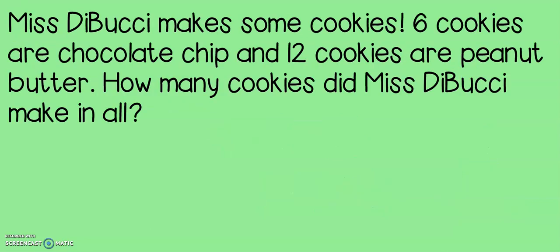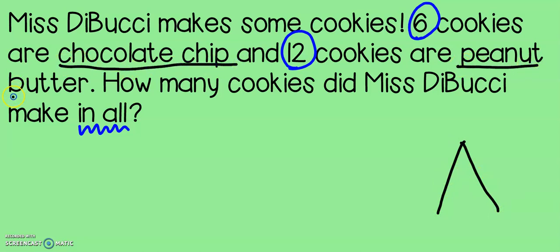Here's another example. Mr. Busey makes some cookies. Oh, yum. That sounds delicious. Six cookies are chocolate chip and twelve cookies are peanut butter. How many cookies did Mr. Busey make in all? This is a great one. I know that I have chocolate chip cookies and I have peanut butter cookies. That's two different groups. But the question is, how many in all? Just like the last problem, in all is a key word for my total.